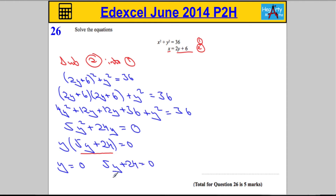Which means that 5y must equal negative 24, and then dividing both sides by 5 — you can use your calculator here — it's going to be y equals negative 4.8.